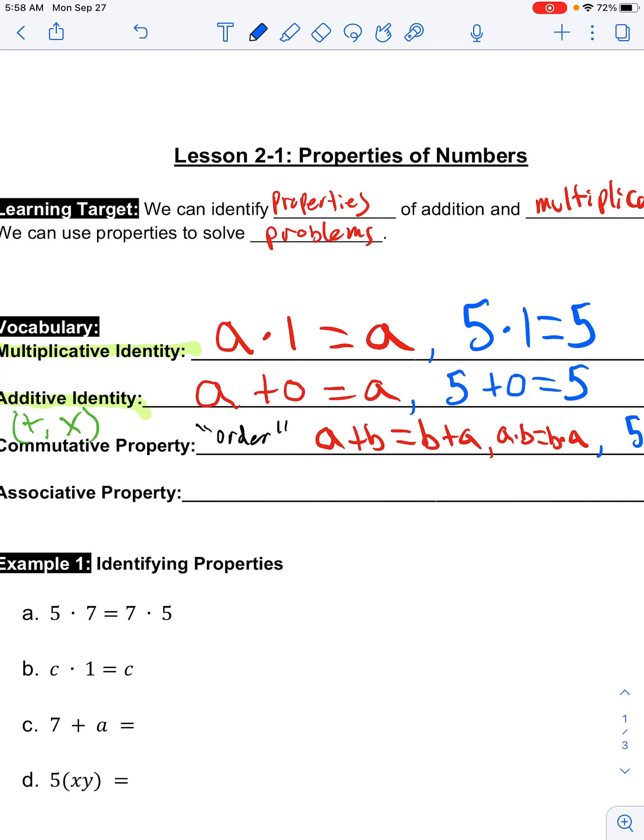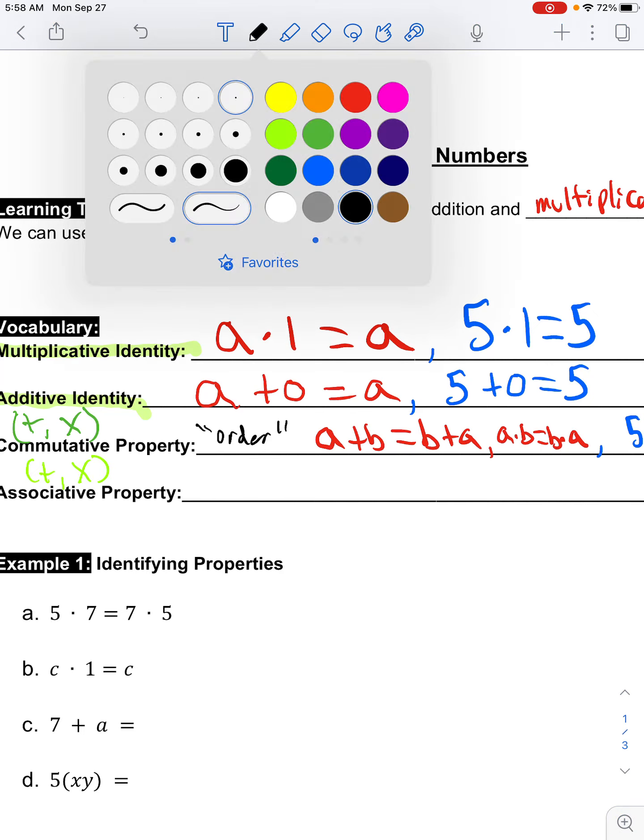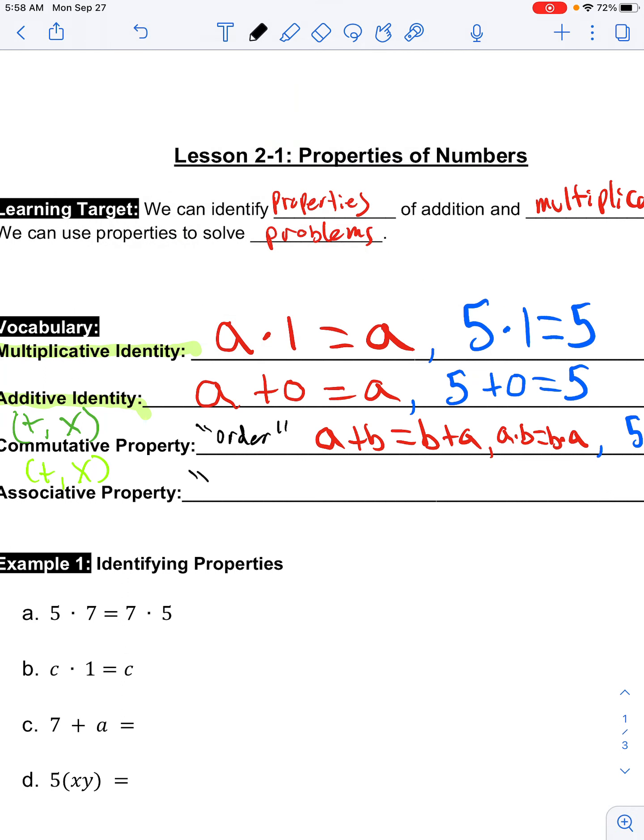These properties for both commutative and associative work for addition and multiplication. The associative property is similar, but this one's all about grouping symbols, aka parentheses, brackets. How are we grouping these numbers together? So I'm going to say I have parentheses a plus b plus c equals, I can change where I have my parentheses and I'm still going to get the exact same answer.